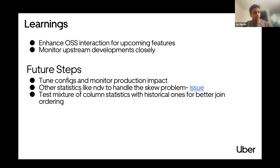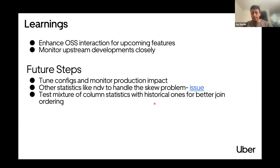Our next steps include tuning more configurations and monitoring production impact. We also plan to work on additional statistics like NDV (number of distinct values) or null counts to handle join skew problems — potentially capturing NDV statistics at runtime to improve the stats store. We also plan to test with a mixture of column statistics combined with historical ones for better join ordering, since most candidate plans during join reordering will have no history, making it difficult to compare them with historical statistics alone.